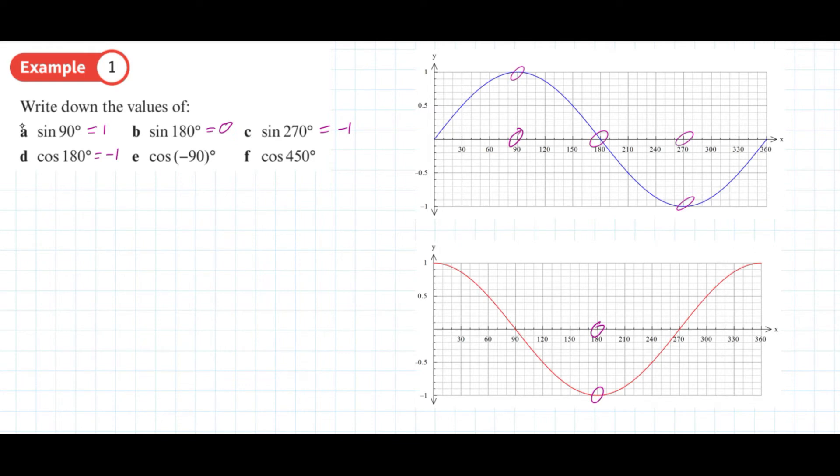Now when it comes to the cosine of 90 degrees, that's actually off our graph. But what we can imagine is that the cosine graph has a line of symmetry about the y-axis, so the cosine of minus 90 degrees is the same as the cosine of 90 degrees.